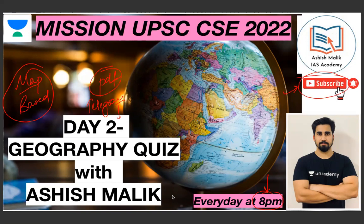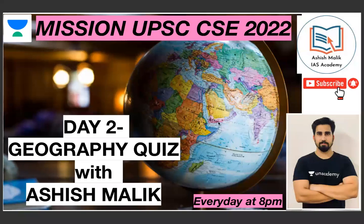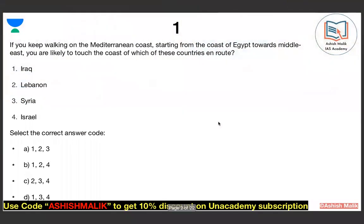Please do subscribe and support this kind of initiative. Now let's start from day number 2. The first question is on your screen. Imagine that you are going along the Mediterranean coast and you have started from Egypt, going towards the Middle East. Tell me which countries' coasts you will touch.